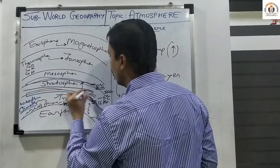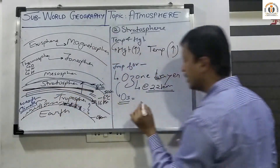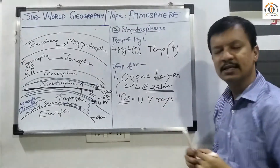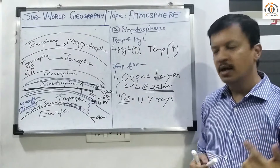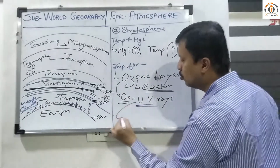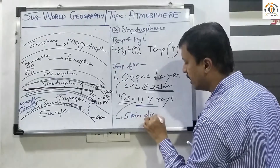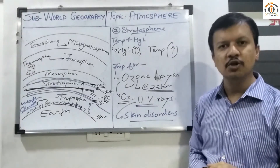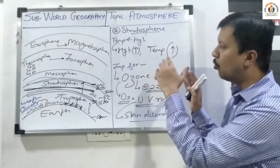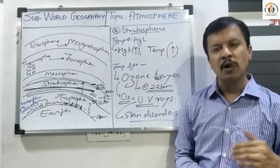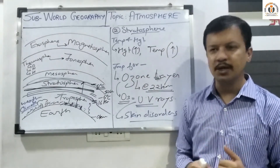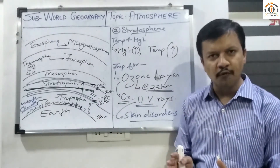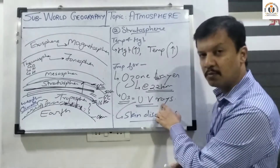The sun rays carry three elements: UV rays, the light spectrum, and infrared. UV rays are harmful to human beings because they cause skin disorders. So the ozone layer basically protects humans from UV rays. Ozone present in the stratosphere is useful for human beings because it protects us from harmful UV rays.